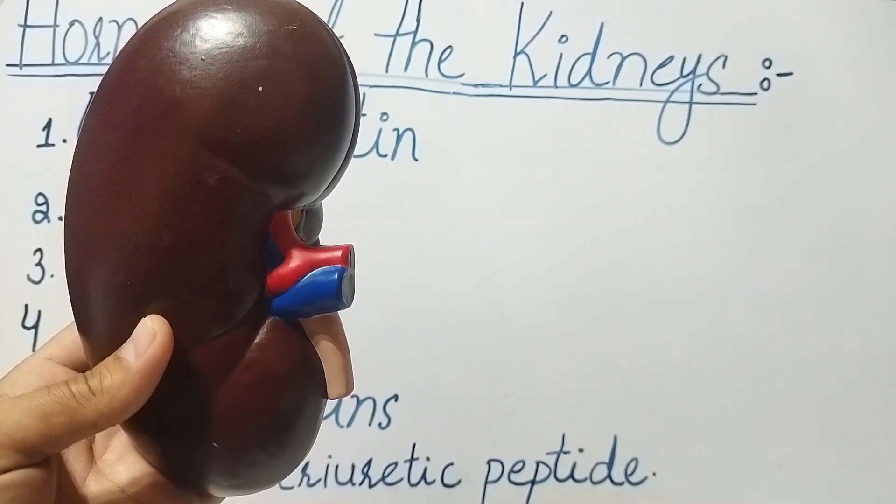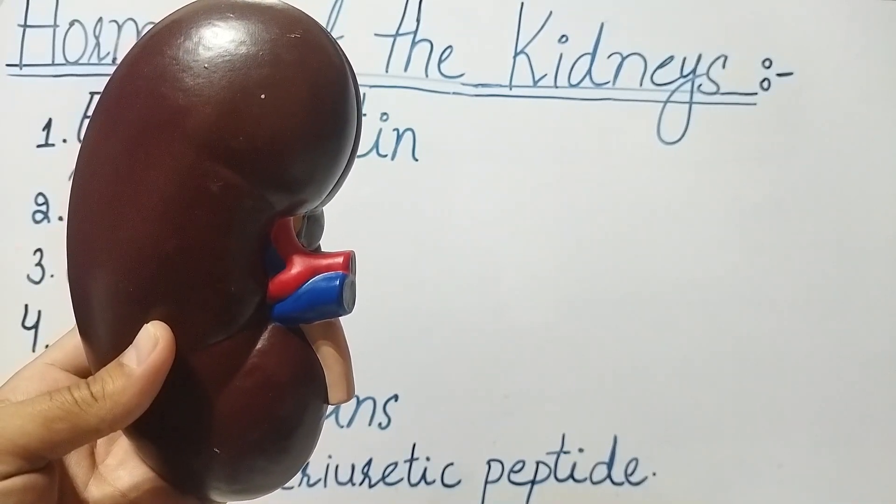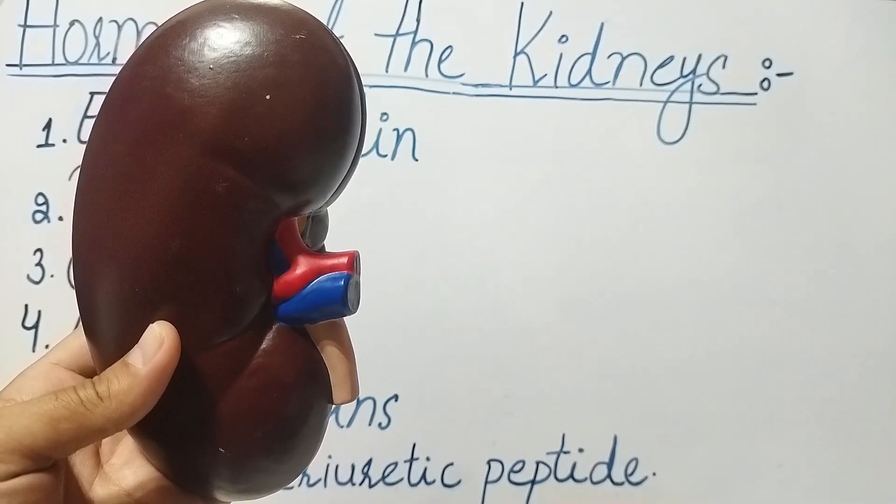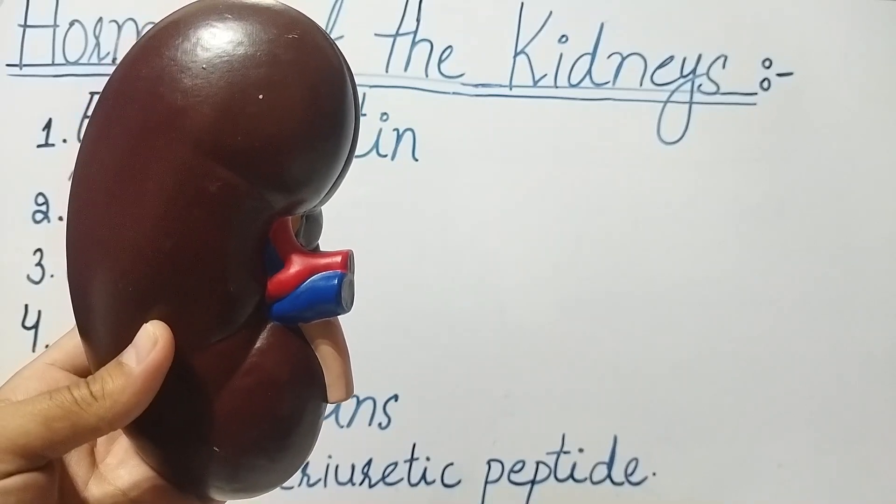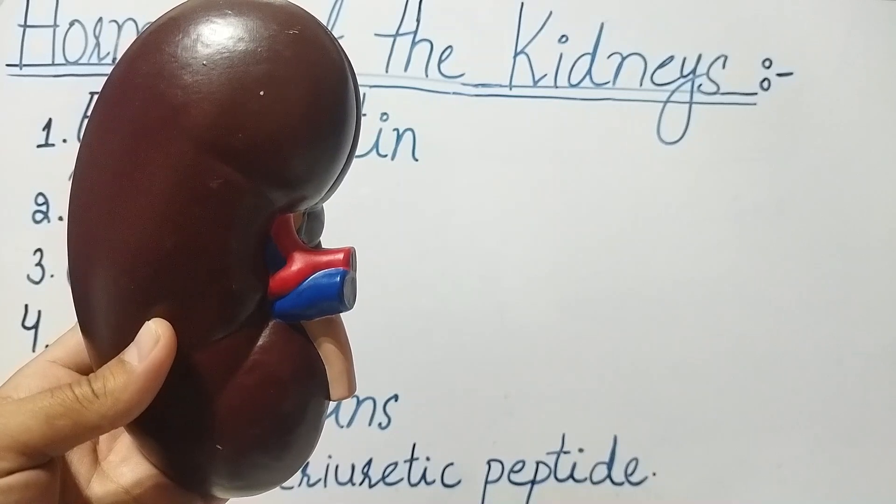Number six: atrial natriuretic peptide. This is released by the heart in response to high blood pressure and it promotes the excretion of sodium and water, leading to a decrease in blood volume and blood pressure.